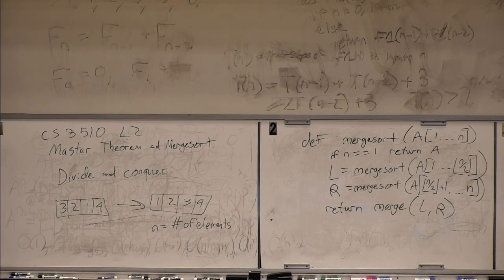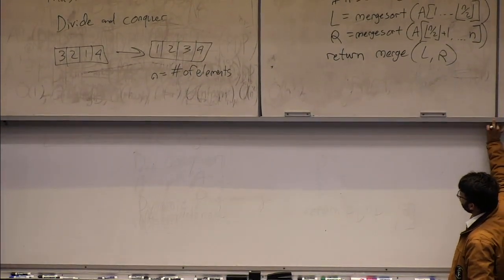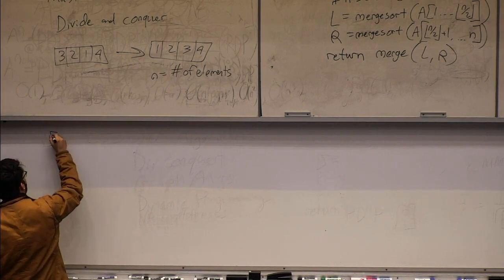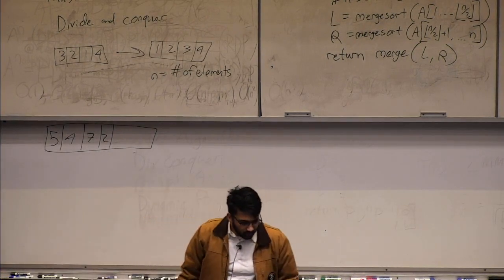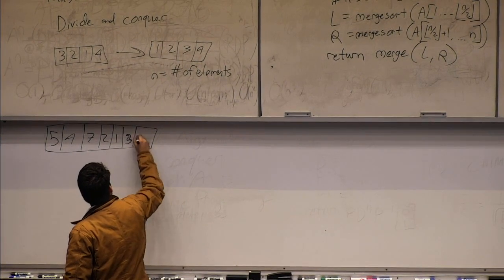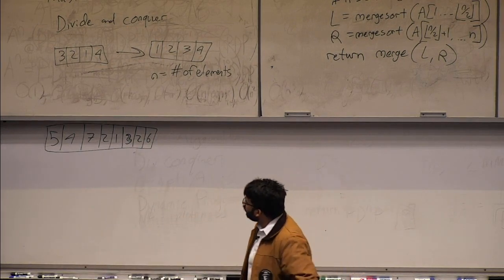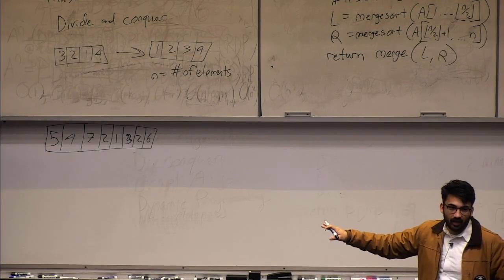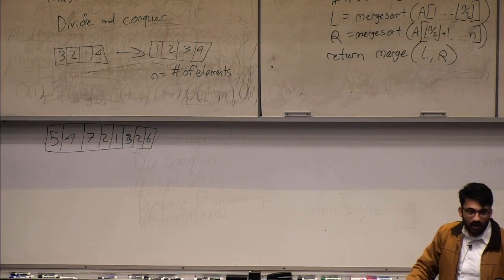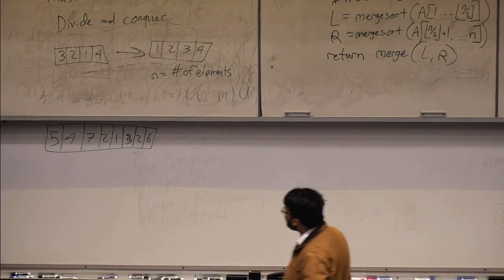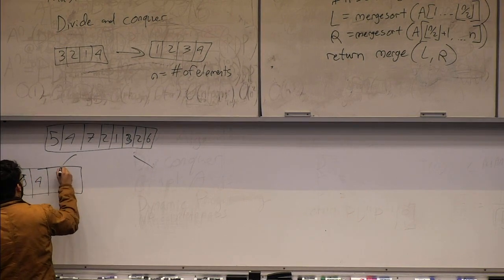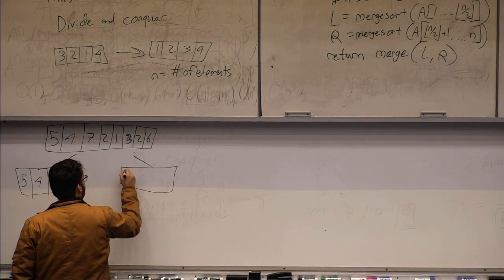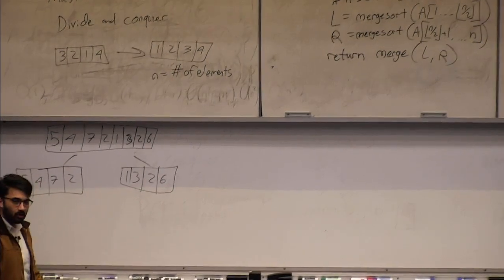Let's trace through an execution on the array: 5, 4, 7, 2, 1, 3, 2, 6. Conveniently, I've chosen eight elements — a power of 2 — so there's no uneven splitting. MergeSort first splits this into two halves: [5, 4, 7, 2] and [1, 3, 2, 6].